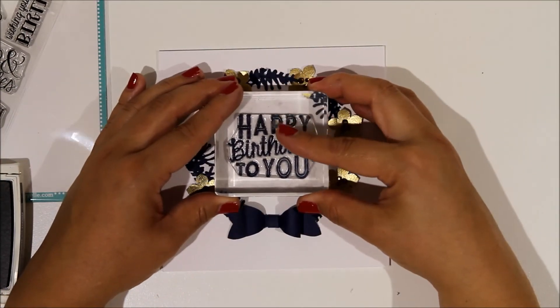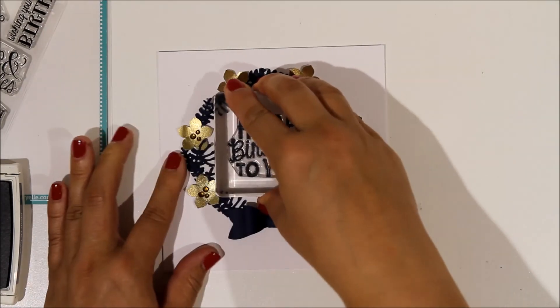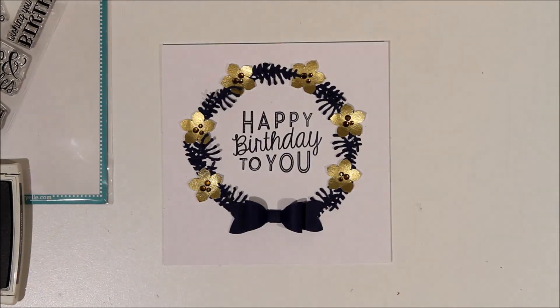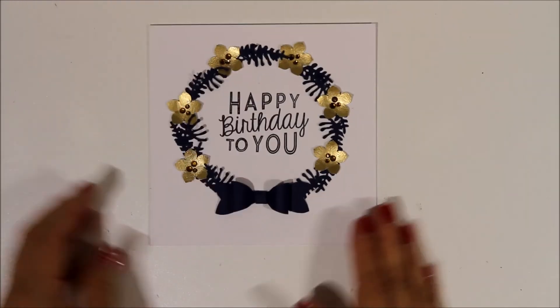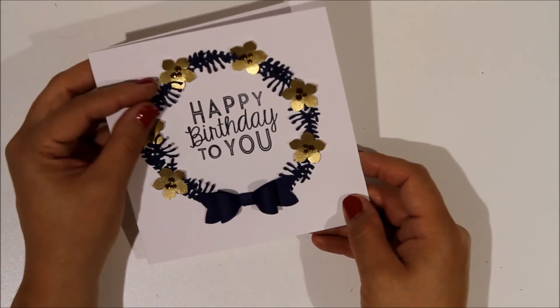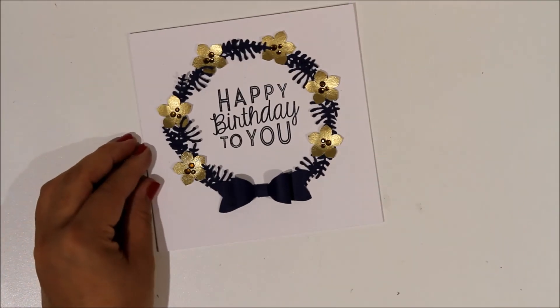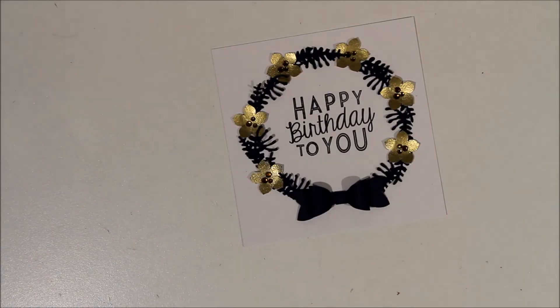So I mount my sentiment onto my clear block, give it a test stamp to make sure that it works. I'm happy with that and I go ahead and be brave and just literally stamp into the middle of the card or in the middle of the wreath. And that's a Stampin' Up ink in Night of Navy which is the same as the cardstock that I'm using.